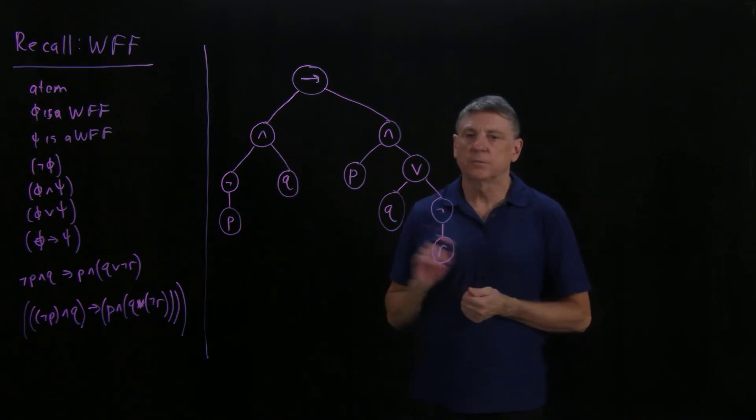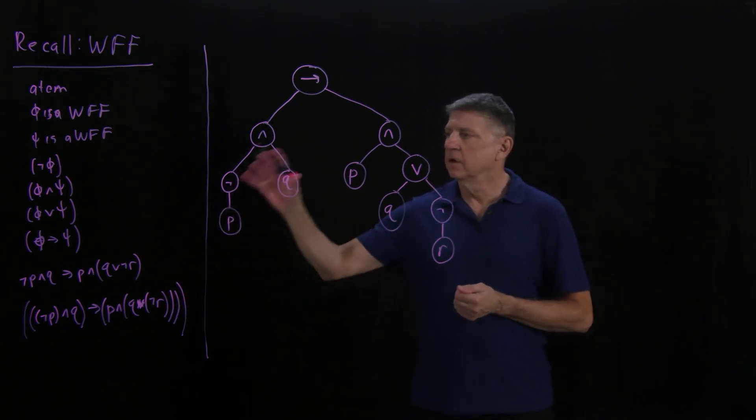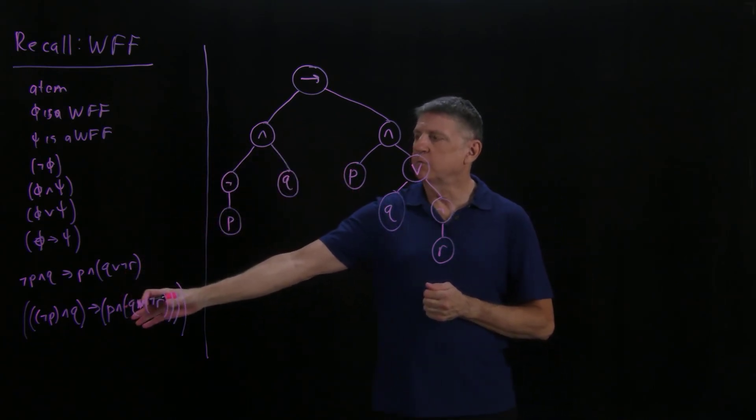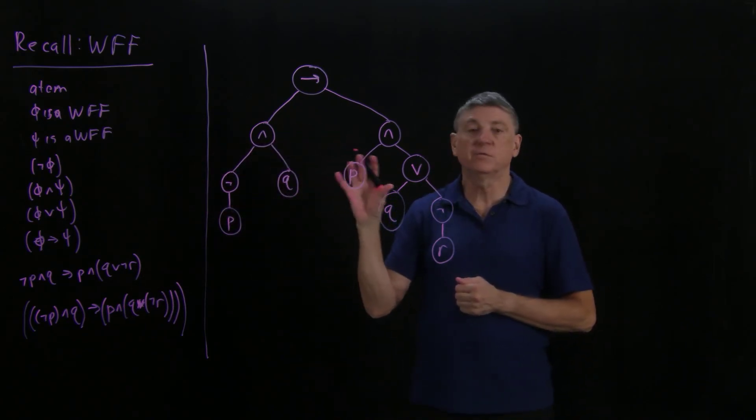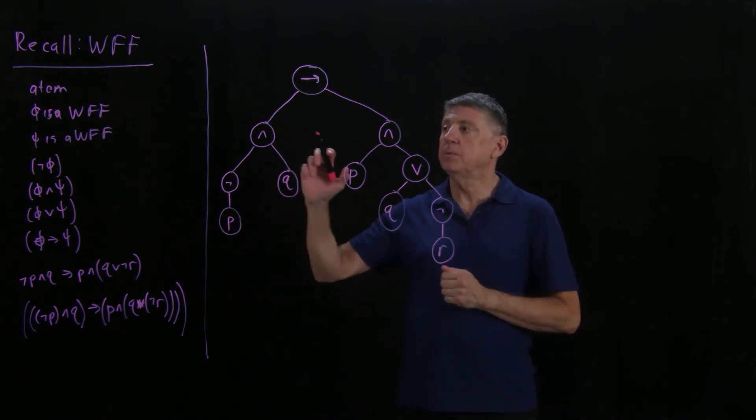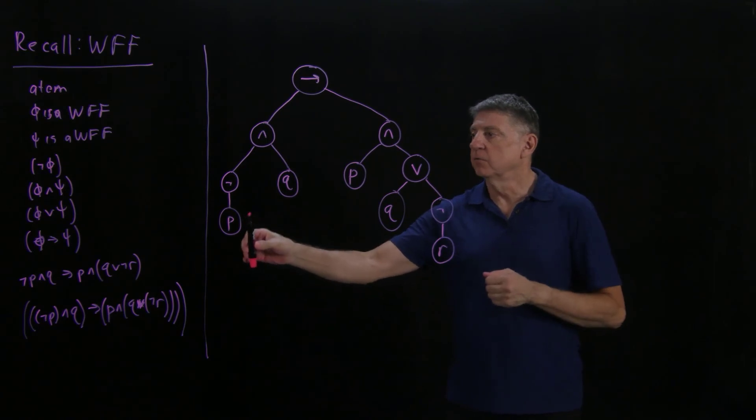So from this parse tree, we have a mapping between these. For every well-formed formula, there is a parse tree, and for every well-formed parse tree, there is a well-formed formula. From the parse tree, we can make certain inferences.